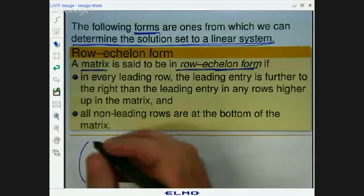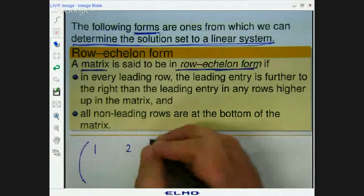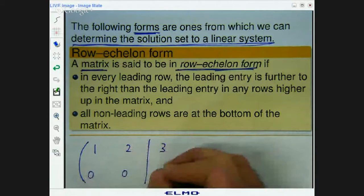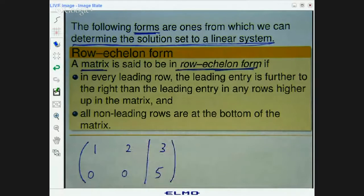Okay, let me do an example because that's a lot to take in. So here is an example. This could represent a system of a matrix associated with a system of equations that we've come up with through row operations. So is this matrix in a row echelon form?